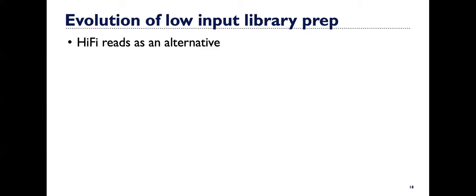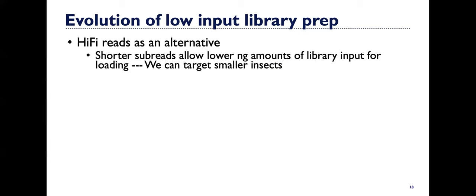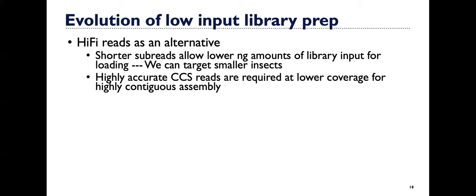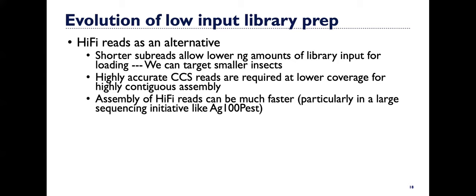We're looking now towards hi-fi reads as an alternative. There's many things that favor them. Shorter sub-reads allow lower nanogram amounts of library input for loading, so we can target smaller insects, less starting DNA. The high accurate CCS reads are required at a lower coverage to still generate a highly contiguous assembly. So we don't need as many CCS reads as we would CLR reads to create very high quality assemblies. An assembly of the hi-fi reads themselves can be very fast. So particularly in a large initiative like this, where we're looking at doing many assemblies a week, being able to do a hi-fi assembly in a few hours or in a day is advantageous over running assembly runs that might run for several days or a week.